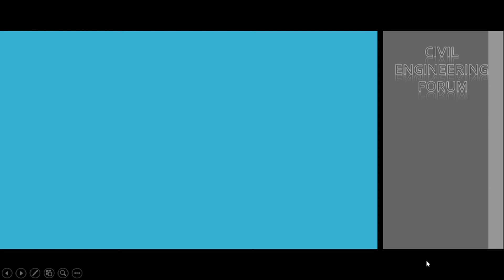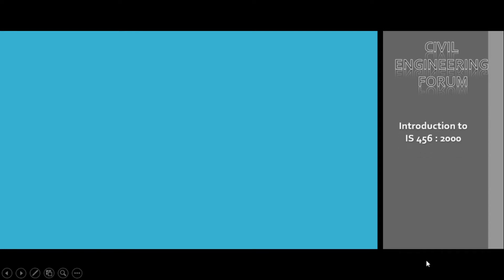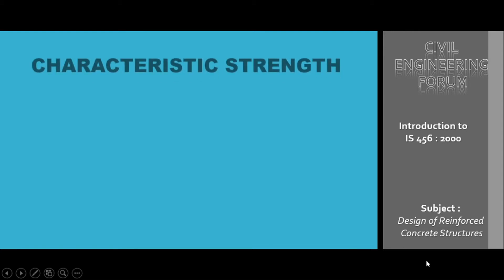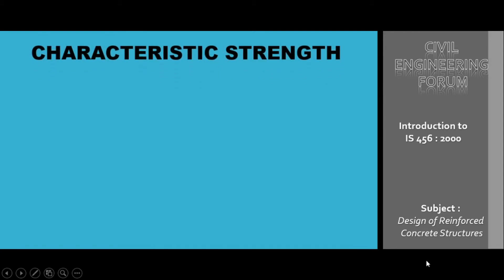Hello friends, welcome back to my channel Civil Engineering Forum. We are in the introductory part of Indian Standard Code 456:2007 under the subject Design of Reinforced Concrete Structures. Today we are going to learn a very important topic: characteristic strength. We will see the meaning of this word characteristic strength.